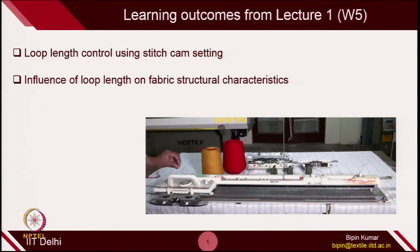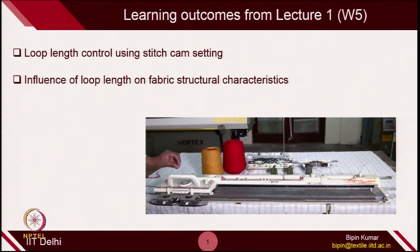Now we move to this particular lecture. I have taken a very simple topic: when you change the loop length with the help of stitch cam setting, how the fabric structure will behave and look, and what changes you will expect when you change the loop length. First, I will introduce you to how you can control the loop length on the machine — this is the single bed machine from week number 2 — and then how that loop length controls the fabric structure.